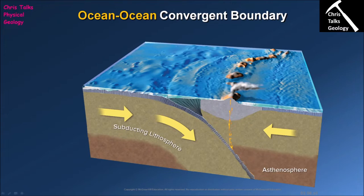The first type is the ocean-ocean convergent plate boundary, where a piece of oceanic crust hits another piece of oceanic crust. The second type is the ocean-continent convergent plate boundary, where oceanic crust meets continental crust. The final type is the continent-continent convergent plate boundary, where two pieces of continental crust collide.